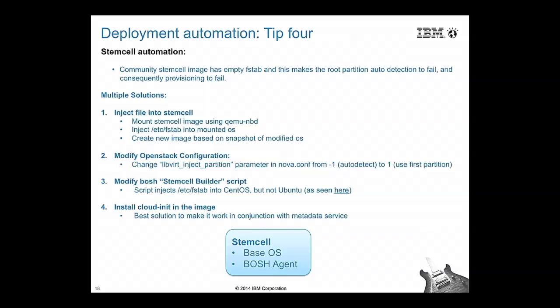Regarding stemcells — the base OS images that Cloud Foundry deployments use — the community images didn't work as-is; we needed to make modifications. We found the FSTAB entry was missing. You could either inject it manually, change the OpenStack configuration parameter if using a dedicated OpenStack, or best of all, have cloud-init installed in your image so it works in conjunction with the OpenStack metadata service.